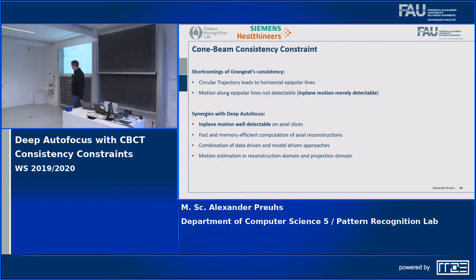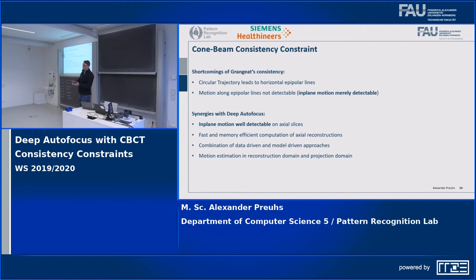This is a good match with our deep autofocus because each has complementary blind spots. In a circular trajectory, Kranzer's theorem produces mostly horizontal epipolar lines, making in-plane motions hard to detect while out-of-plane motions are detected well. Conversely, our deep autofocus operates on axial slices, predicting in-plane motions well but struggling with out-of-plane motions. They therefore complement each other.